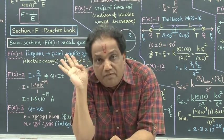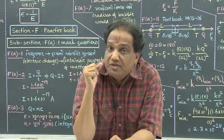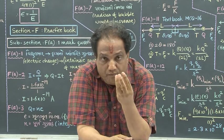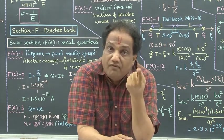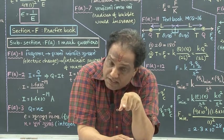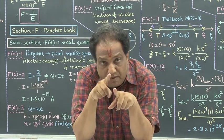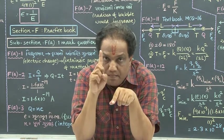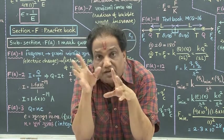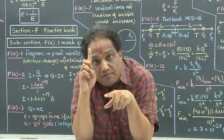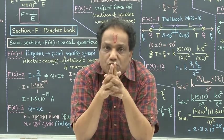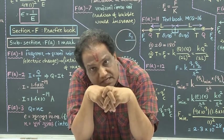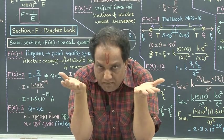Why do we say reciprocal of capacity of allowing electric field lines? Because in vacuum we have the maximum number of electric field lines passing through it, and for vacuum permittivity is minimum. That medium which allows the maximum number of electric field lines to pass through it has minimum permittivity. So smaller is the permittivity, greater is the number of electric field lines which can pass through a given medium. Depending upon this, we have given the introduction of permittivity.